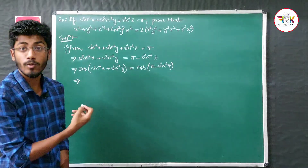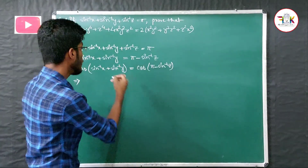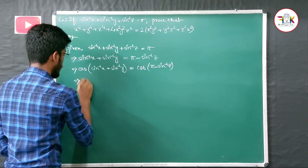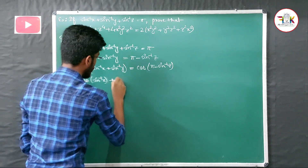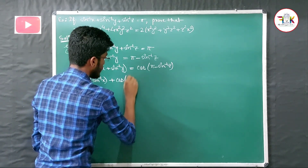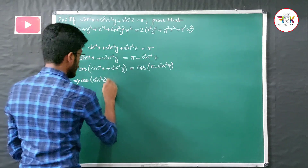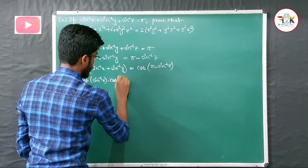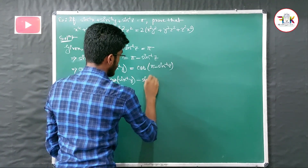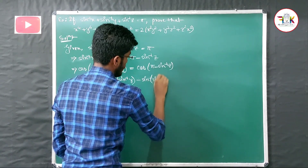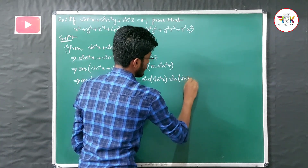Using the cos(A+B) = cosA·cosB - sinA·sinB formula, we expand the left side: cos(sin⁻¹(x))·cos(sin⁻¹(y)) - sin(sin⁻¹(x))·sin(sin⁻¹(y)).